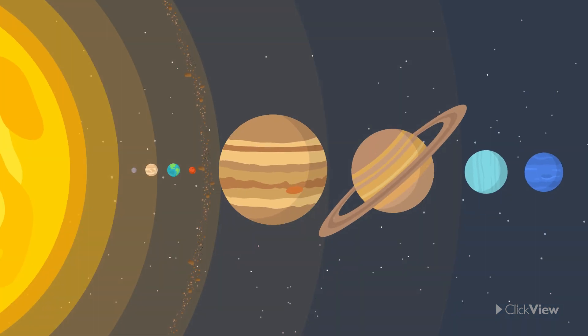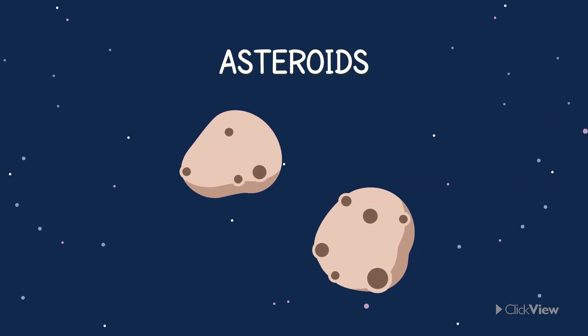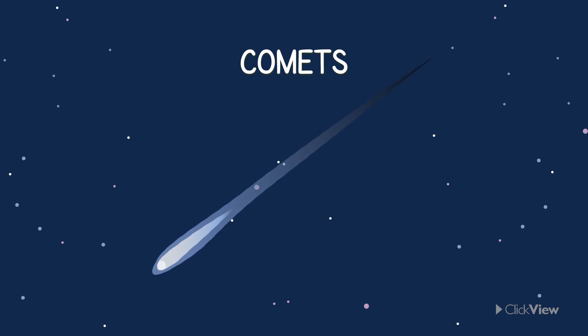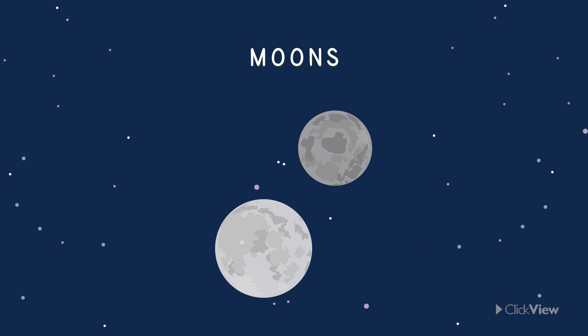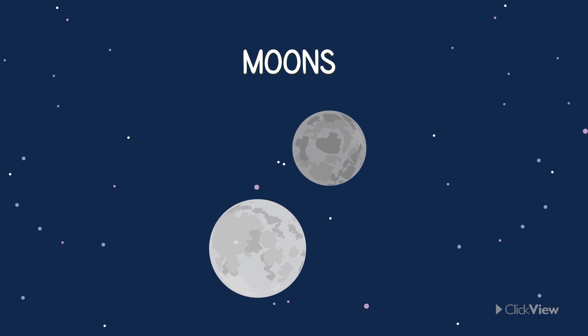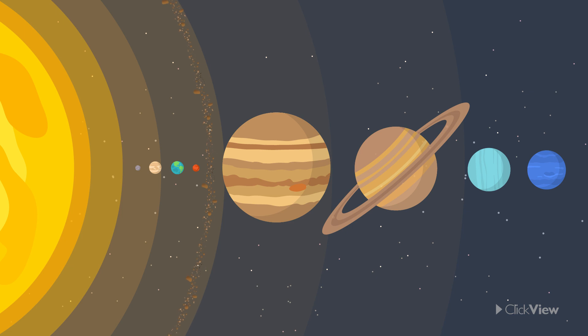In our solar system, other than eight planets, there are many other objects orbiting the Sun such as asteroids, comets, meteors, moons, and much more. However, the eight planets are important because they are some of the largest objects in our solar system, which makes them very interesting to study.